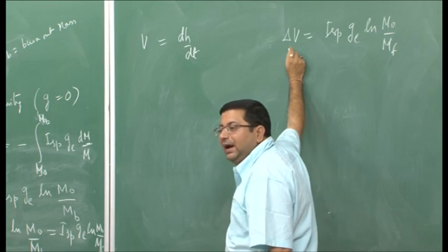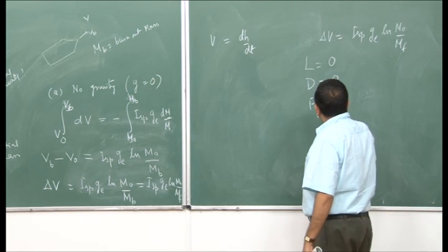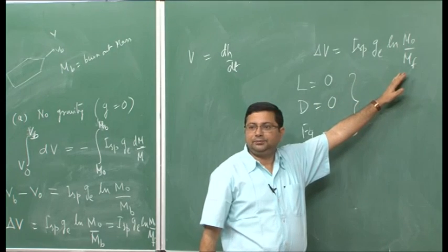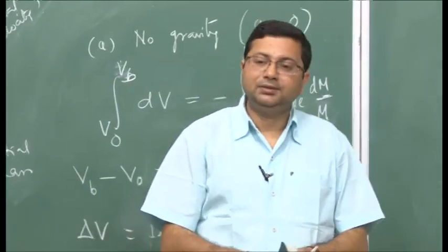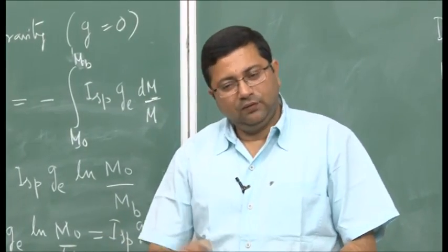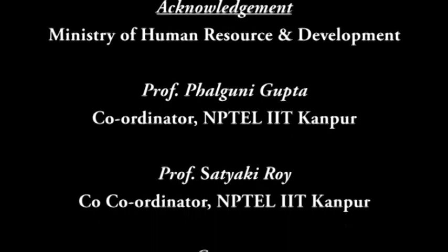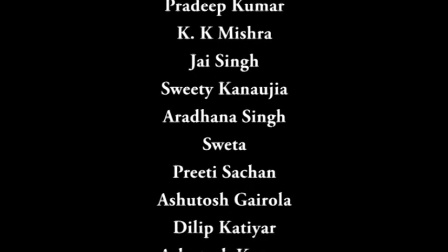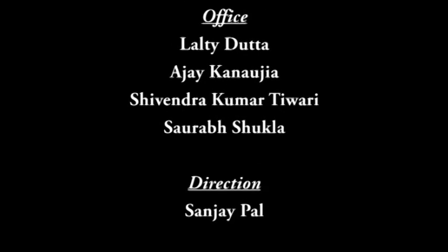These assumptions — no lift, no drag, no acceleration due to gravity — give us this velocity increment. We can also integrate velocity to get displacement, finding how far the rocket goes horizontally or vertically. This formulation applies to both single stage and multistage rockets — for multistage we apply it stage by stage. This expression is very important, and in the next class we will continue with horizontal flight, then vertical flight, then revisit with the alternative approach. Thank you.